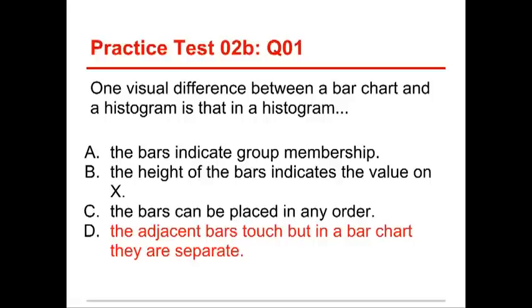The other ones here, the bars indicate group membership. Well, that would be in a bar chart. The height of the bars indicates the value on x. No, the value on x is indicated by where it is left to right across the bottom. The bars can be placed in any order. That's true for a bar chart, but not for a histogram. That's number one.